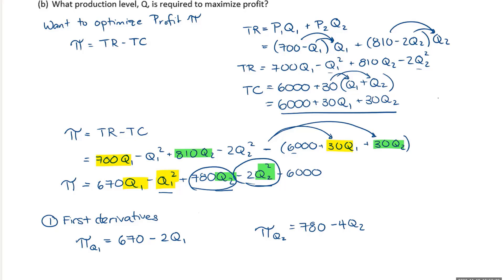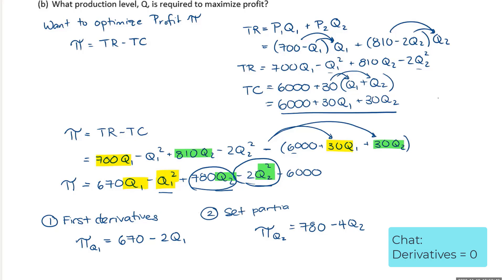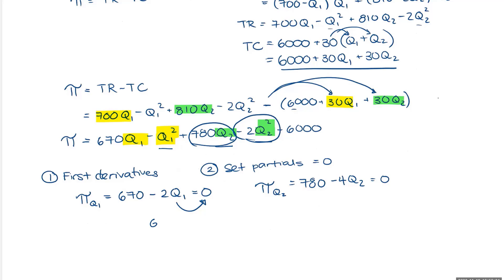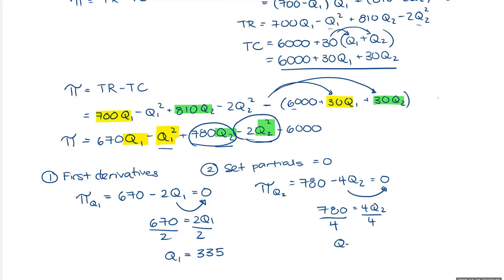Step two: set the partial derivatives equal to zero and solve for the variables. Setting 670 − 2Q1 = 0 and moving 2Q1 to the other side gives 670 = 2Q1; dividing by 2 gives Q1 = 335. For the second equation, 780 − 4Q2 = 0 gives 780 = 4Q2; dividing by 4 gives Q2 = 195.